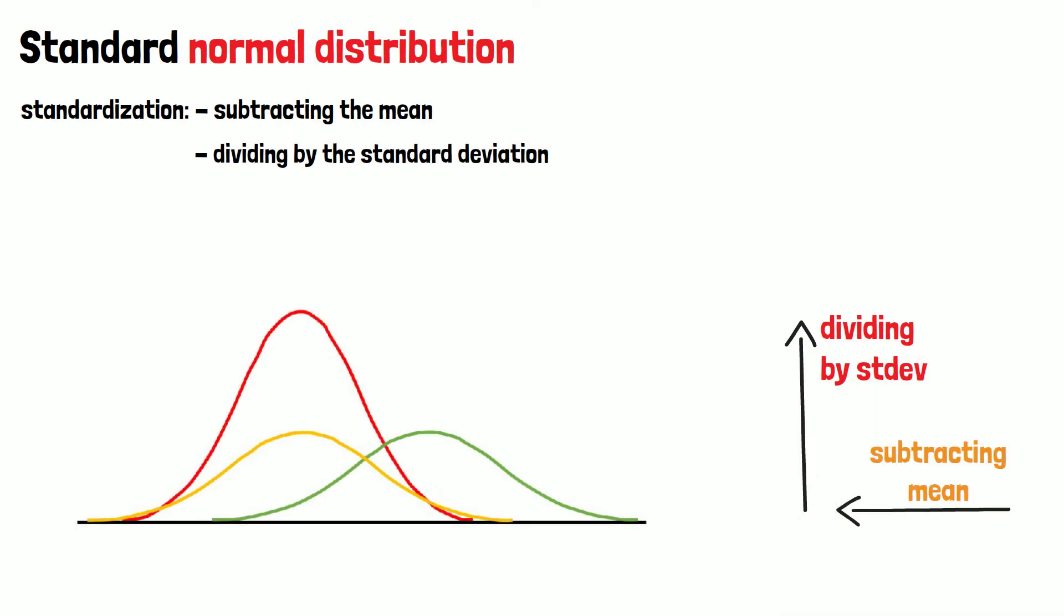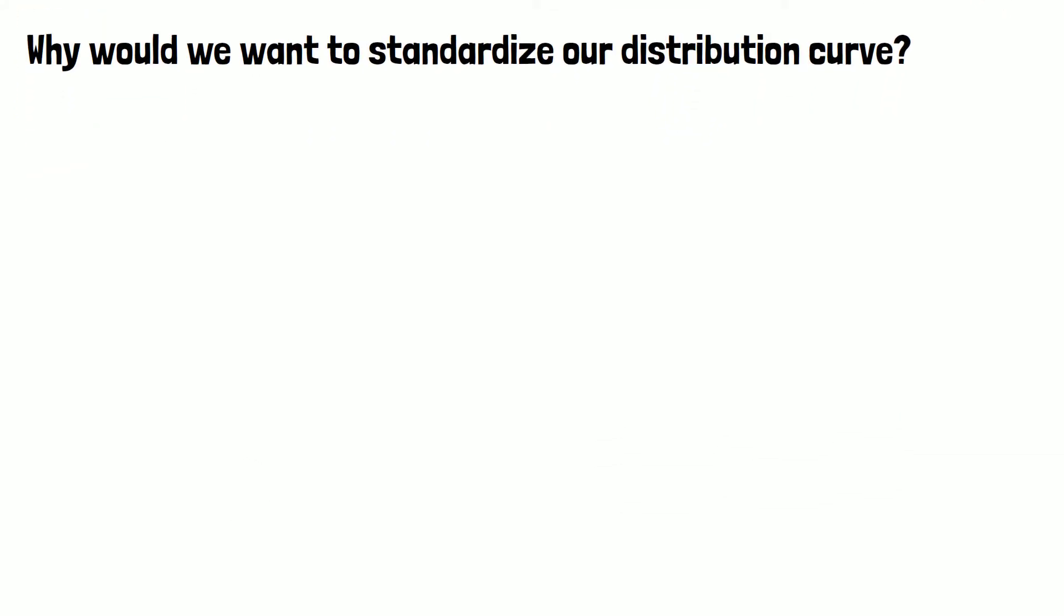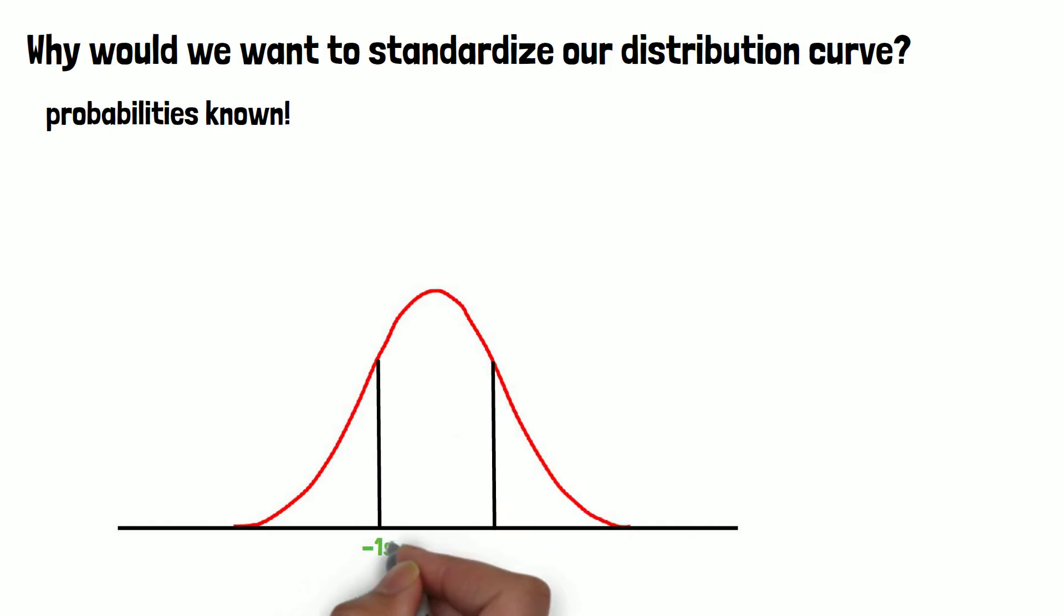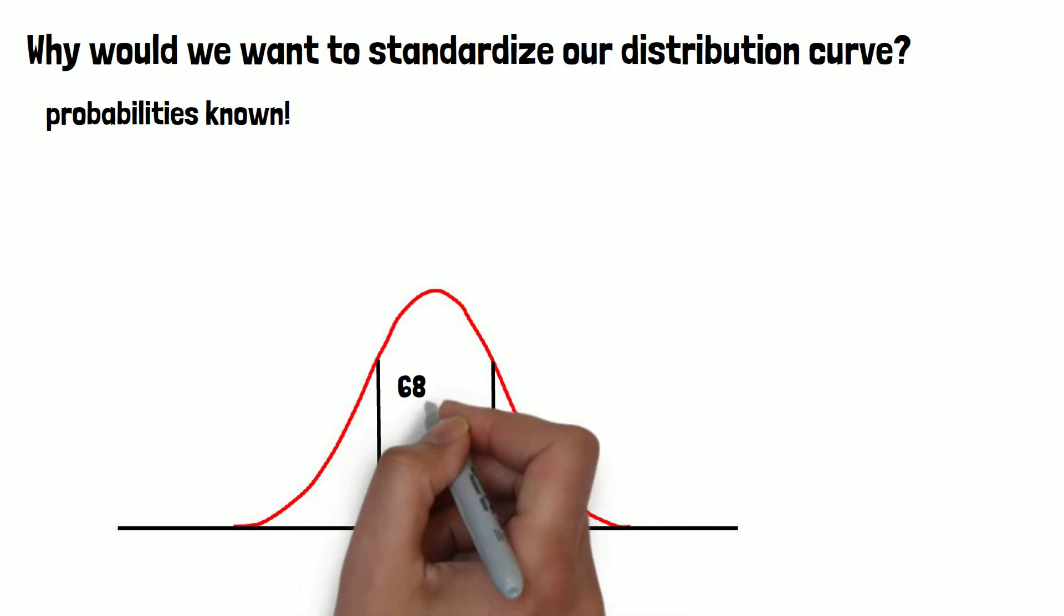But why would we want to standardize our distribution curve? The advantage of the standard normal distribution is that we know exactly which probabilities we can find in which ranges, regarding the area under the curve. The values within one standard deviation around the mean, positive and negative, which is also called sigma...